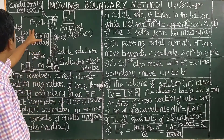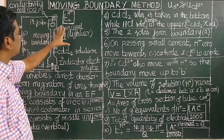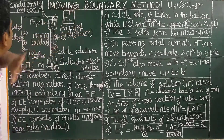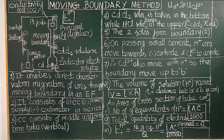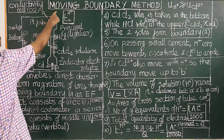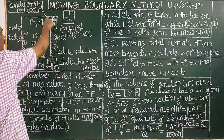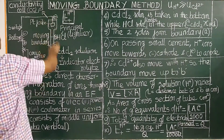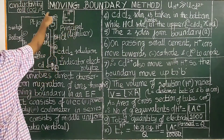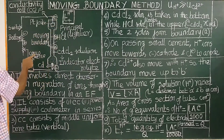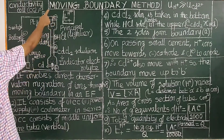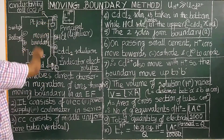This is the experimental setup for the Moving Boundary Method. It consists of an electrolysis cell — that is, a conductivity cell.